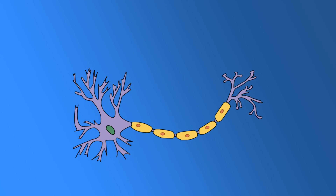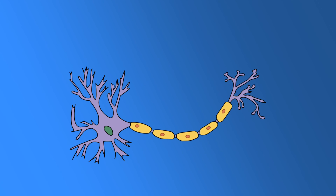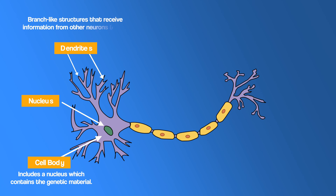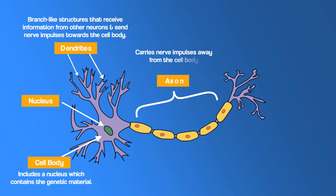You need to understand the parts of a neuron and their function — it's common to be given a diagram in the exam and be asked to label it. The cell body includes a nucleus containing the genetic material. Dendrites are branch-like structures that connect with other neurons, receiving information and sending nerve impulses towards the cell body. The axon carries nerve impulses away from the cell body, and can range from a few millimetres to over a metre in the spinal cord.